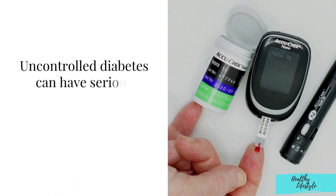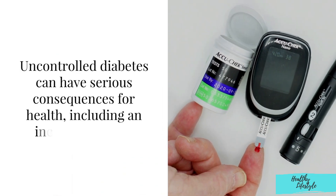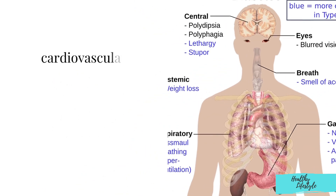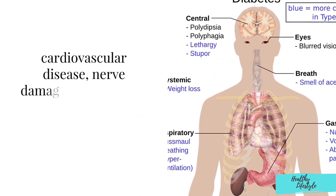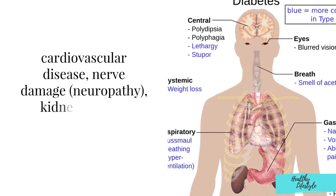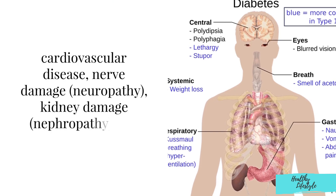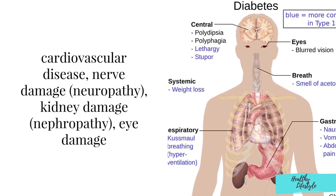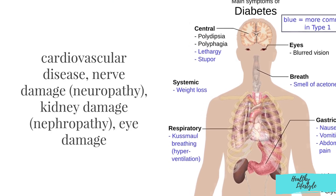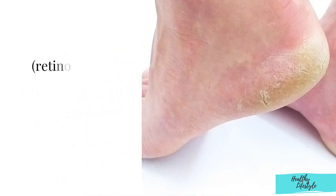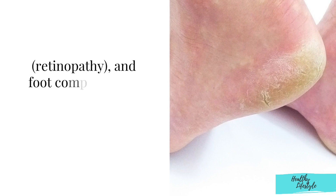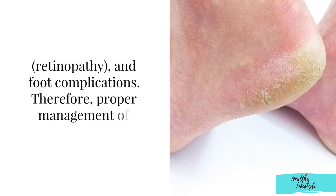Uncontrolled diabetes can have serious consequences for health, including an increased risk of cardiovascular disease, nerve damage (neuropathy), kidney damage (nephropathy), eye damage (retinopathy), and foot complications.